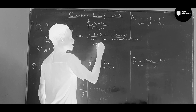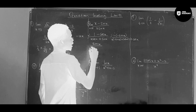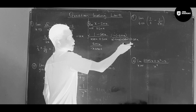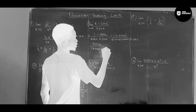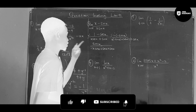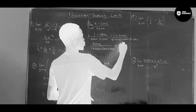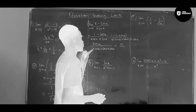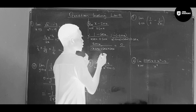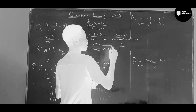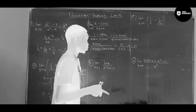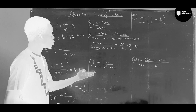So we have sin x over negative x sin x plus cos x plus cos x. Now let's substitute zero: sin zero equals zero on top, and on the bottom zero times sin zero is zero, plus cos zero which is one, plus cos zero which is one. So we get zero over two, which equals zero. So the answer is one half.